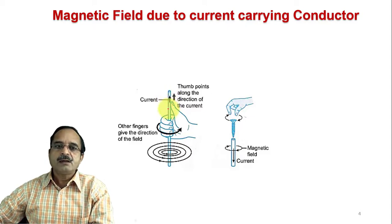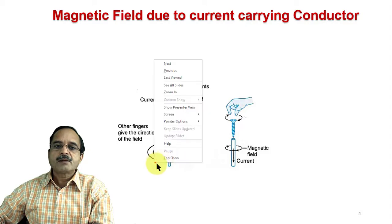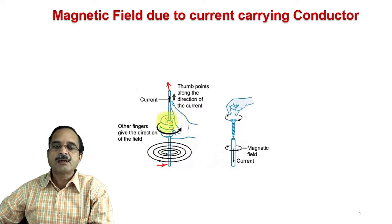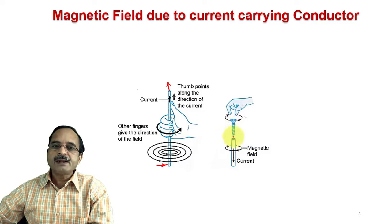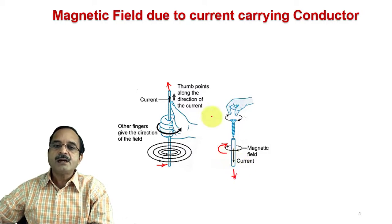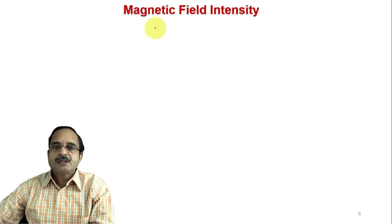If a DC current is flowing through a conductor, the flux produced around this conductor is given by the right-hand rule, which indicates the direction of the magnetic flux lines around the current-carrying conductor. This can also be expressed using a right-handed screw: if the screw is rotated clockwise, the movement is downward — that downward direction is the direction of current, and the clockwise rotation is the direction of the magnetic field.